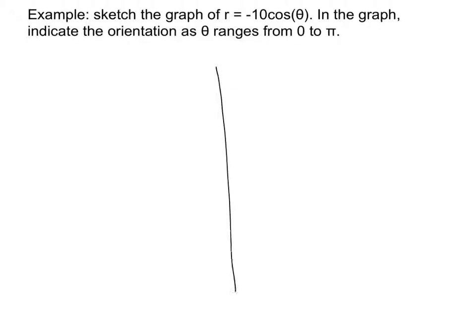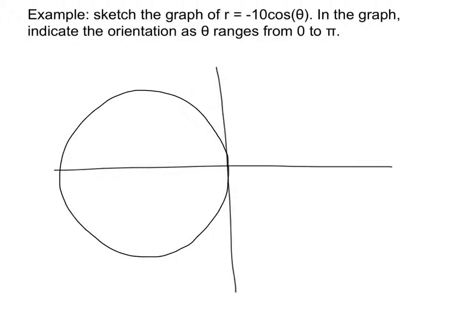This is negative 10 cosine theta. It's a cosine graph, which means it's going to be cut by the x-axis. I'm going to have a circle that's on the left. We have negative 5 here in the middle, and the graph ends over here at negative 10.